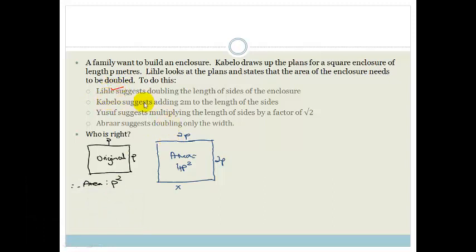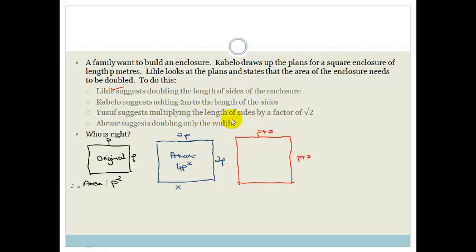Cabello suggests adding 2 meters to the length of the sides, giving (p+2) by (p+2). Multiplying out: (p+2)² = p² + 4p + 4. This could possibly be double the original size — we need to check with numbers.